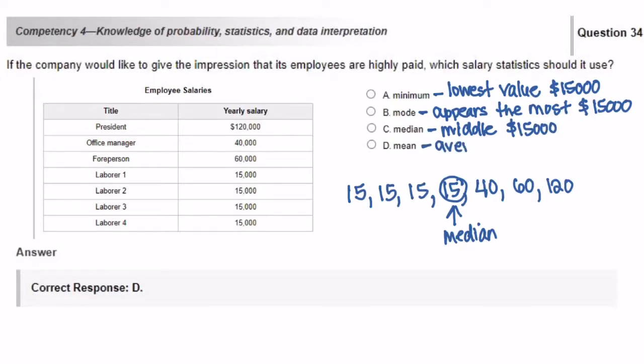Finally, answer choice D, the mean. We know the mean to mean average. So the average of the numbers we have in our data set is $280,000. We have seven numbers in our data set, so we divide that number by seven to get $40,000. So that is what we're going to use to give the impression that the employees are highly paid.